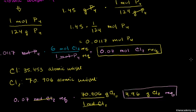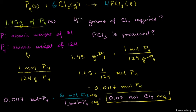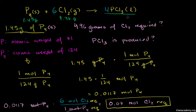We've answered the first part: if we have 1.45 grams of phosphorus, we're going to need 4.96 grams of chlorine. Now the second question is how much phosphorus trichloride is produced. There are two ways — an easy way and a hard way. The easy way: mass is conserved, so the total mass on the reactants side equals the total mass on the products side. We have 1.45 grams of phosphorus plus 4.96 grams of chlorine, so the phosphorous trichloride produced must have a combined mass equal to those reactants.